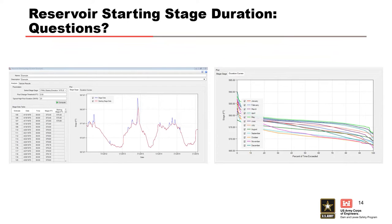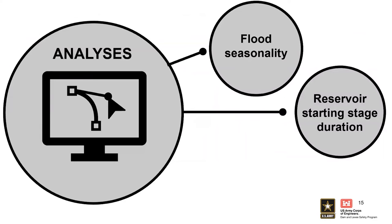RFA does this sampling many times for every event, so you get a good spread of data for the antecedent reservoir condition. For example, if RFA selects the month of May for a simulation iteration, the corresponding reservoir starting stage duration for May is used to sample a starting stage for the reservoir routing computation. If you run the full simulation, you can look at 10,000 different realizations with 10,000 events per realization. The table will tell you the sampled starting stage month, the antecedent reservoir elevation, and the inflow volume used — you can track through the entire process.